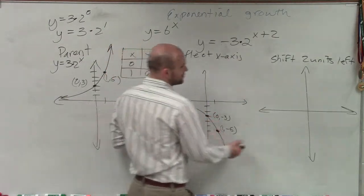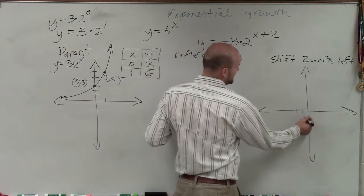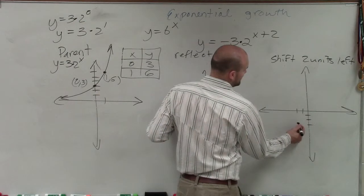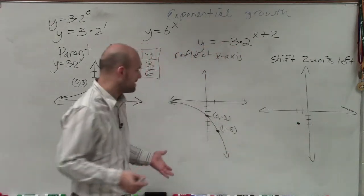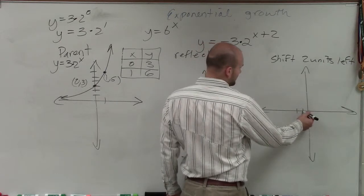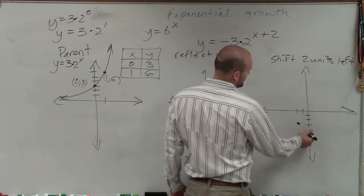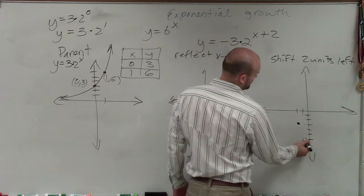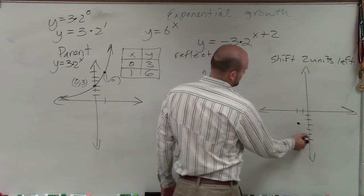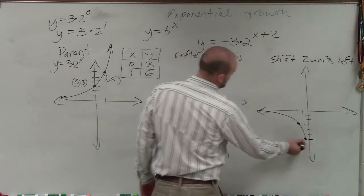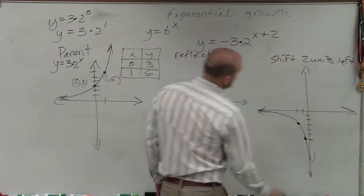So rather than having 0, negative 3, I'll now have negative 2, negative 3. Instead of having 1, negative 6, I'm now going to have negative 1, negative 6.